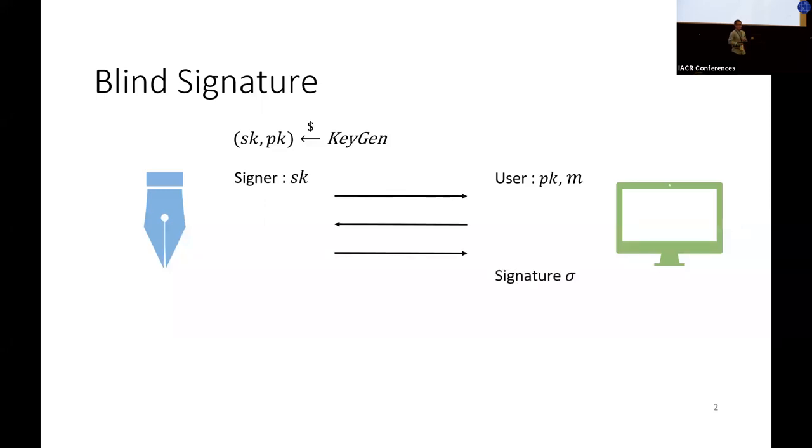In the context of blind signatures, we have a signer with secret key and a user with public key. The user wants to sign a message M by running an interactive protocol with the signer, and at the end the user will learn a valid signature.